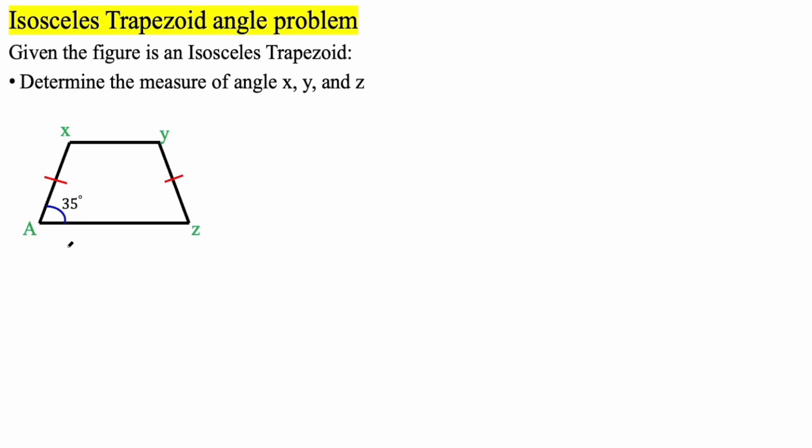So if this right here is 35 degrees, angle Y will be Y plus 35 is equal to 180. So let's write this down. So Y plus 35 is equal to 180.